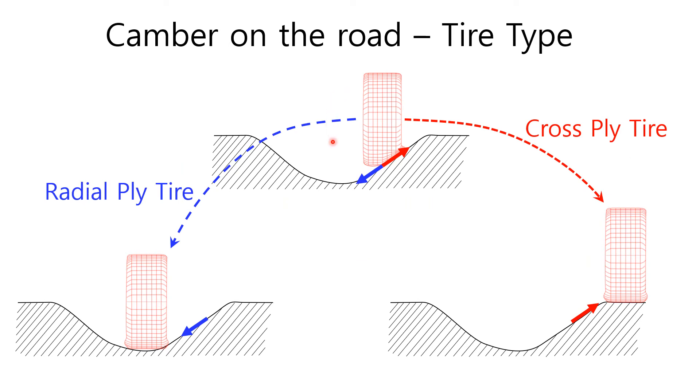This is the pictorial description of two tire types. Cross-ply tires can easily get out of the road discontinuities, but radial-ply tires can't.